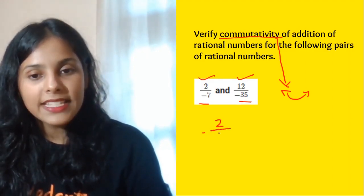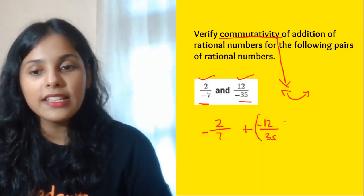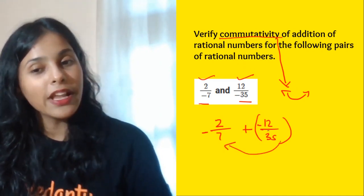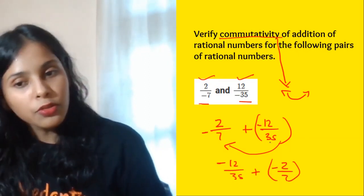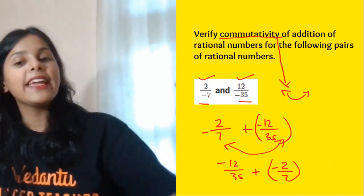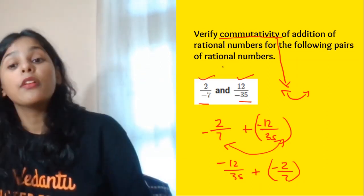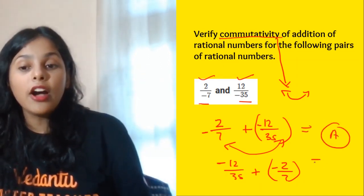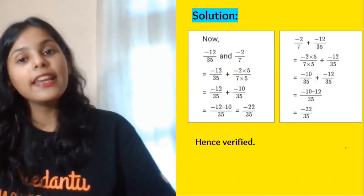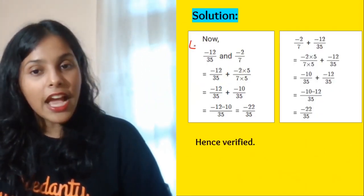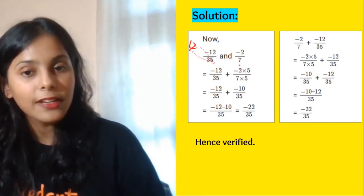For example, if you have to add minus 2 by 7 and minus 12 by 35, you can swap them: put minus 12 by 35 first and minus 2 by 7 second — just change the order and the place. If the answer is the same after doing the operation both ways, then commutativity holds true. Let's check for minus 12 by 35 and minus 2 by 7.